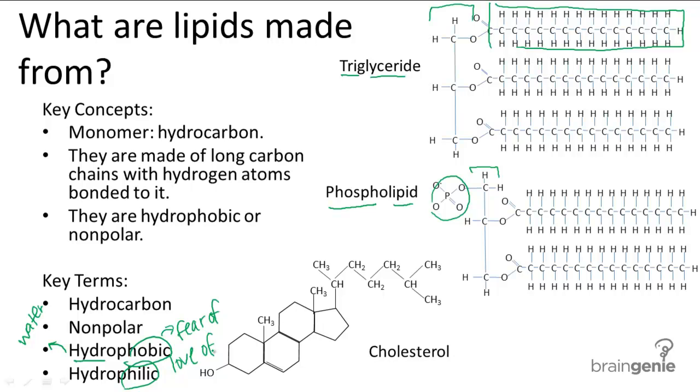Phospholipids are frequently represented like this, with this as the phosphate group, and then two fatty acids drawn like that. They can form double layers, and double layers are sometimes drawn like this. So that's one layer, and then this would be the double layer.